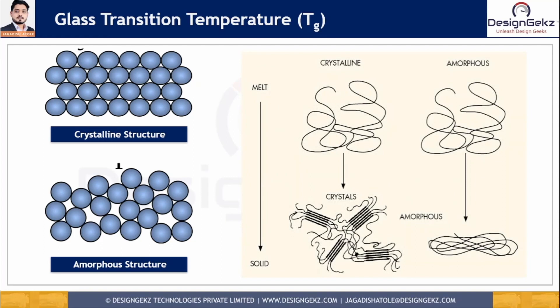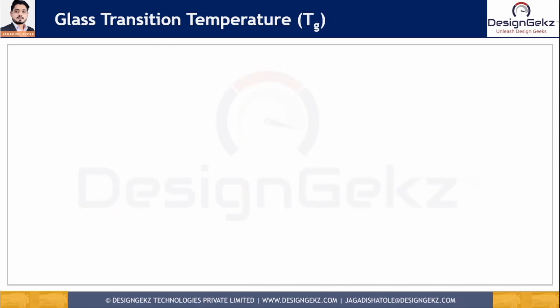In the melt state, both amorphous and crystalline materials show the same phase. But in the liquid state, crystalline polymers have a highly ordered structure while amorphous polymers show a linear structure. Crystalline polymers have a well-defined melting point, and the glass transition temperature is different for each polymer.